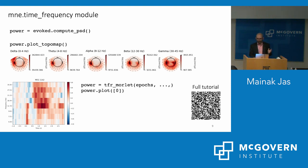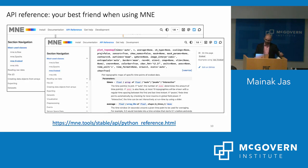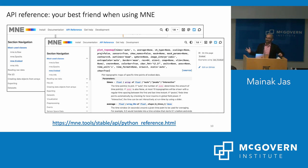You might be asking: how do you know which method to use? The API reference on the website is your best friend. It has a list of all functions available in MNE, and when you click on a function or method you see all parameters described, what arguments they take, and what they return — all available online.